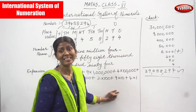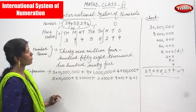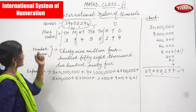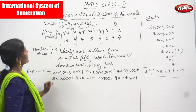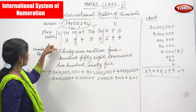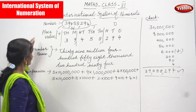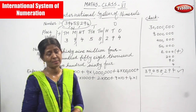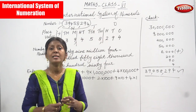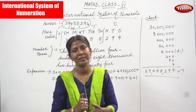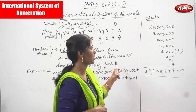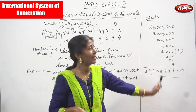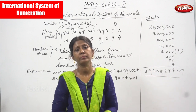I think you understand the International System of Numerals. In questions, they may ask for place value, number name, or expansion form — either in two marks or four to five marks. Go through the videos once or twice and you will understand the concept very well. Read the spelling thoroughly when writing the number name. When doing the expansion form, write the proper method of place value and the checking method. Concentration and adding carefully are very important. Thank you.